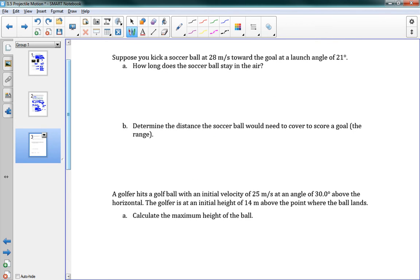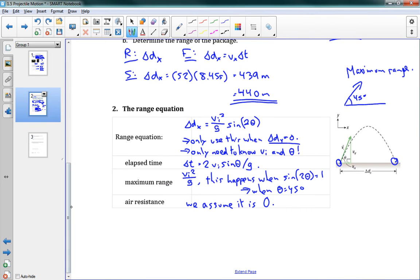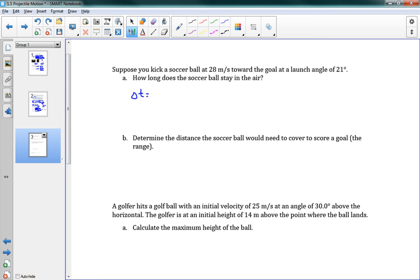Suppose you kick a soccer ball at 28 meters per second towards the goal at a launch angle of 21 degrees. And so then it says how long does the soccer ball stay in the air? We have our equation. We just go on to the previous page. We say delta t equals 2vi sine theta over g. We use that equation. Delta t equals 2vi sine theta over g. And we can put in our values here. So 2 times 28 times sine of 21 degrees over 9.8. This gives us a value of 2.0 seconds.